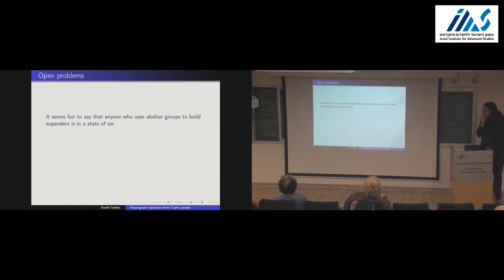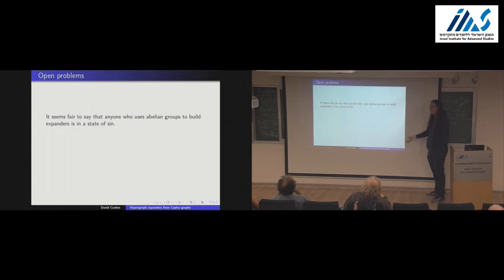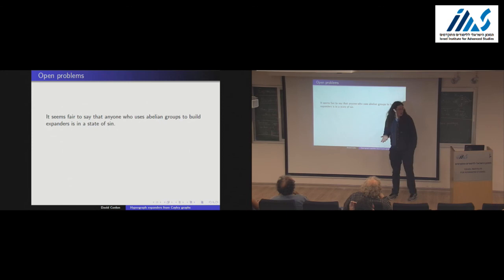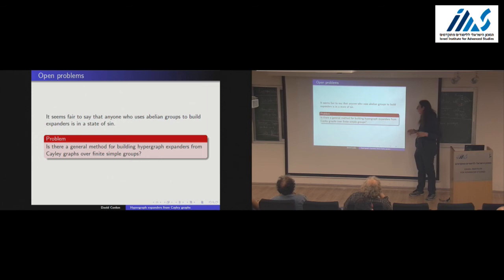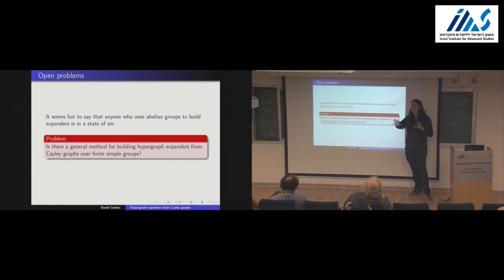The other thing I wanted to mention is that I'm using abelian groups to produce these expanders, which is clearly not optimal — I said at the start that it can't give you anything optimal, since you need this logarithmic degree. Is there some way to use Cayley graphs over other groups to build things with the same properties but smaller degree? In some sense the answer is yes, because you can write down explicitly what a Ramanujan complex is and it ends up being some Cayley graph. But I want a general mechanism for doing this, akin to the work done for graphs — a general mechanism for producing hypergraph expanders from Cayley graphs. There's more I can say, but I'll stop there. Thank you.